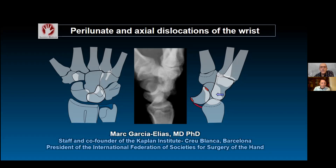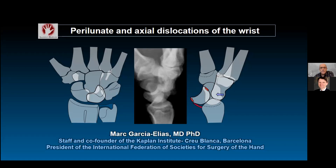Welcome everybody to this session of the Pulver Tab Hand Center webinars, now in its fourth session. Today I will present on perilunate and axial dislocations of the wrist, which is a hot subject, but fortunately not a very frequent or common condition.